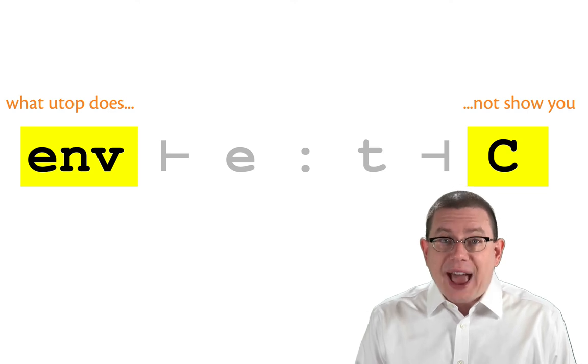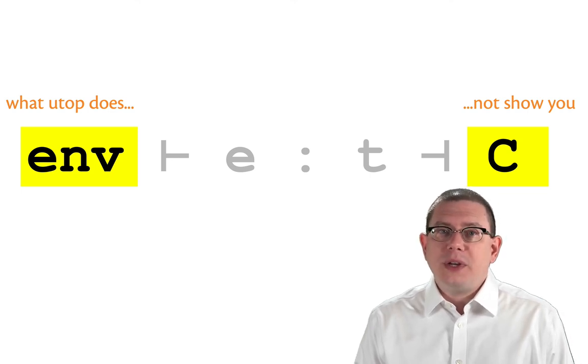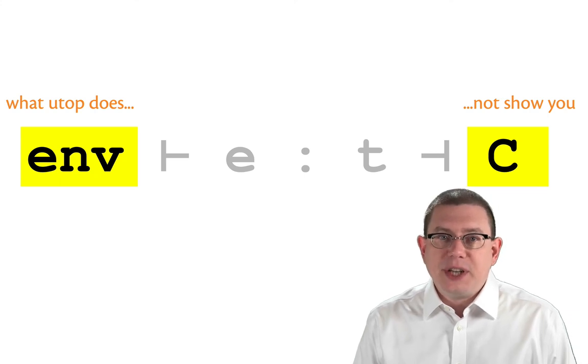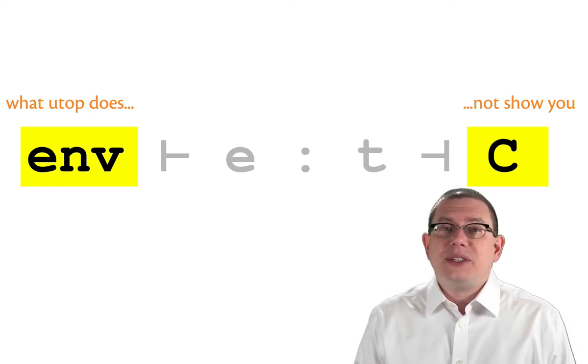So there's a static environment there that has been formed. UTOP, or OCaml, maintains that internally. It doesn't print it out for you. And there's a set of constraints, and you don't see those either.